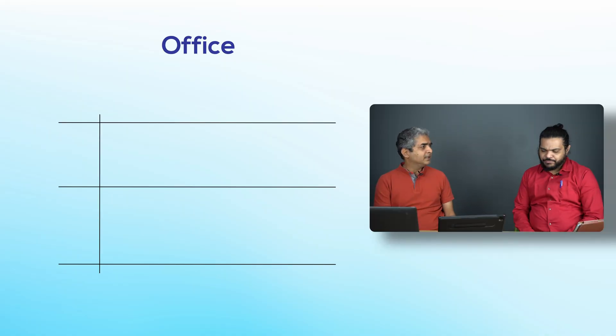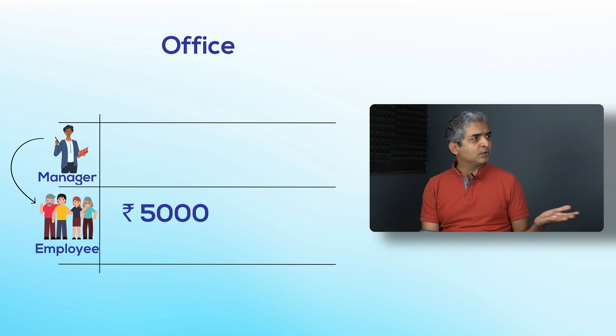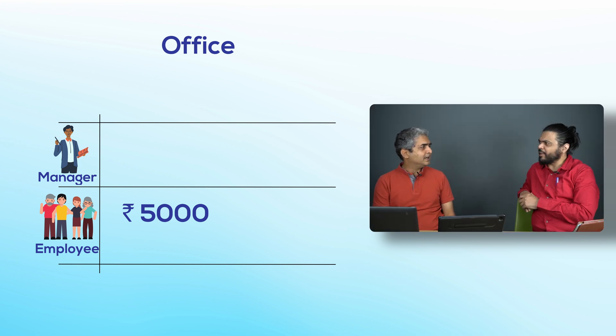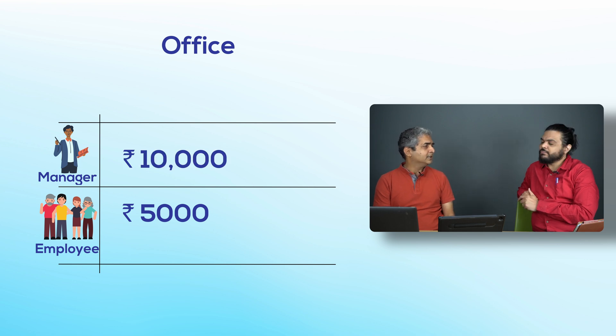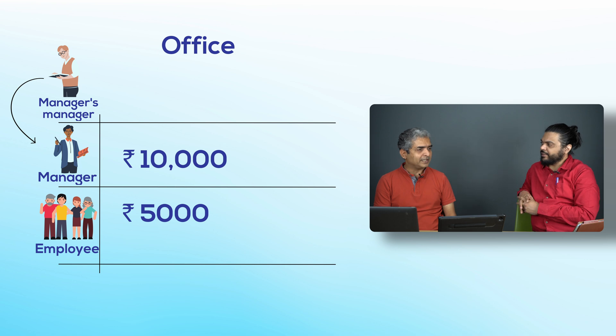Imagine there is an office in which employees are allowed to spend up to 5,000 on their own with just their manager's approval. Like most offices, there is always some petty cash. And then there is a next level for 10,000 where the manager's manager's approval is needed, and more than that goes through a much more elaborate process. Now, the CFO of the company believes that there are a lot of fraudulent expenses going on. How would they detect that?